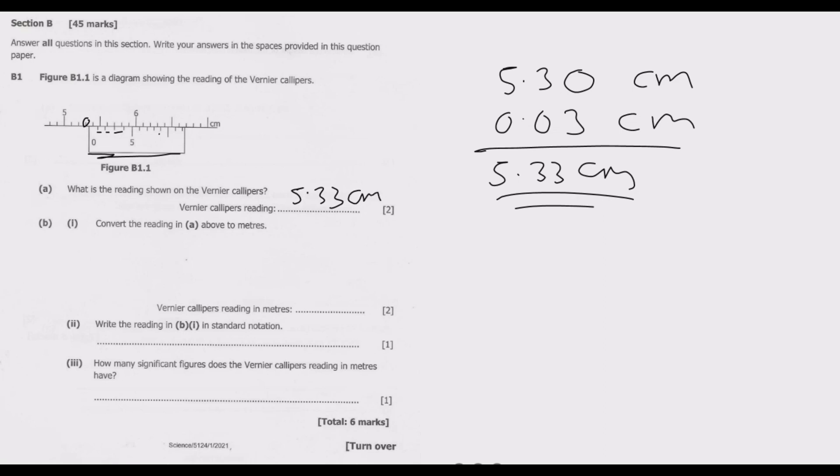Then we go to B: convert the reading in A above to meters. So how many centimeters are in one meter? There are 100. So one meter is basically equal to 100 centimeters. We are converting this to meters, so x equals 5.33 centimeters.